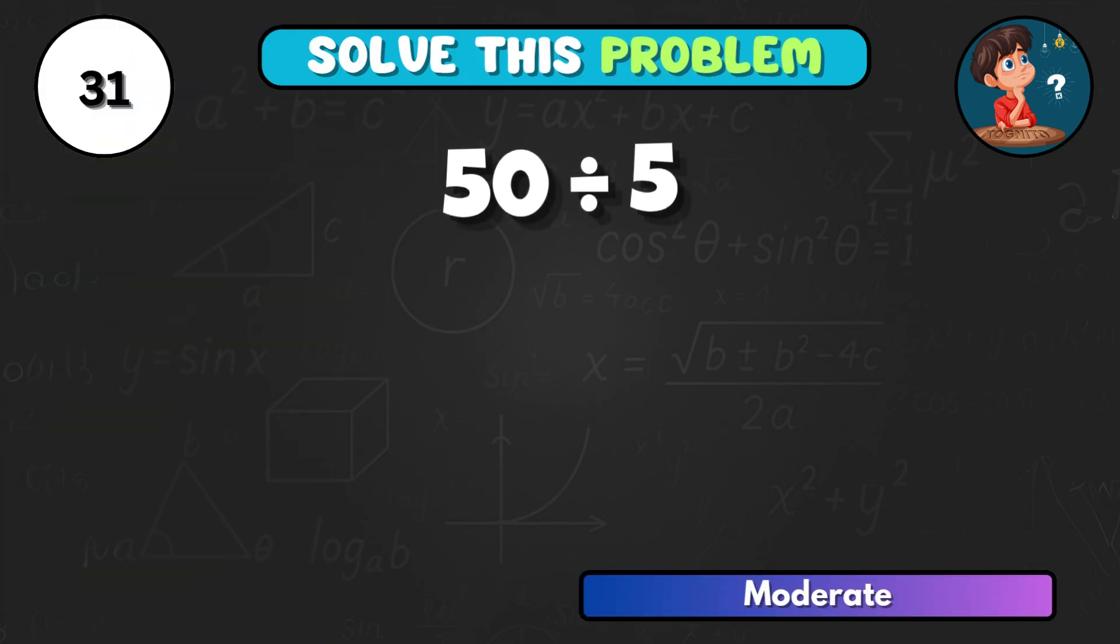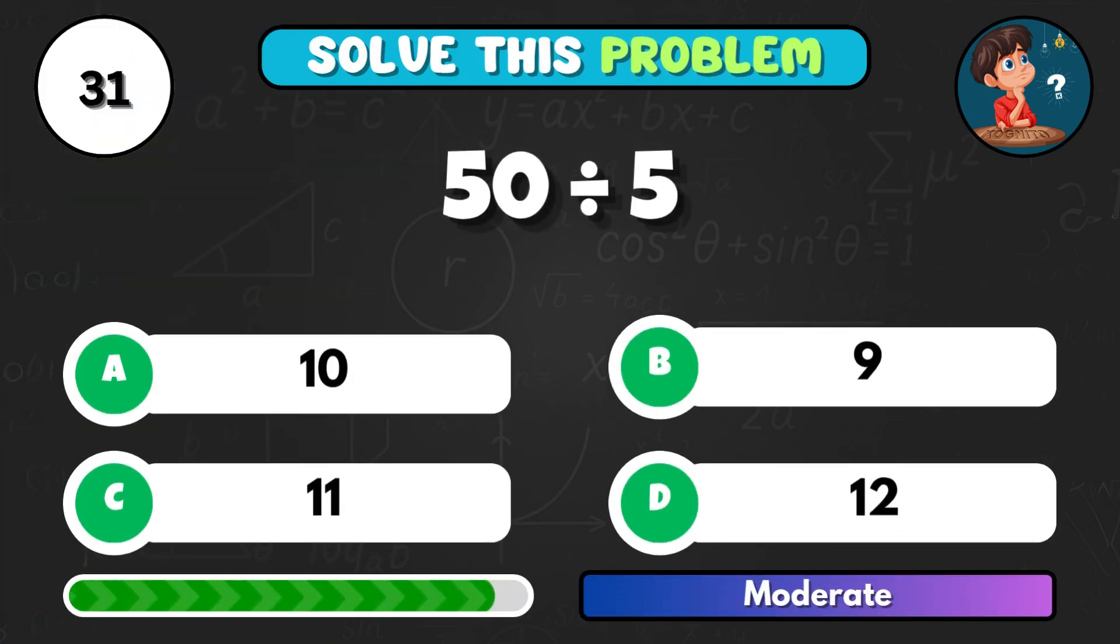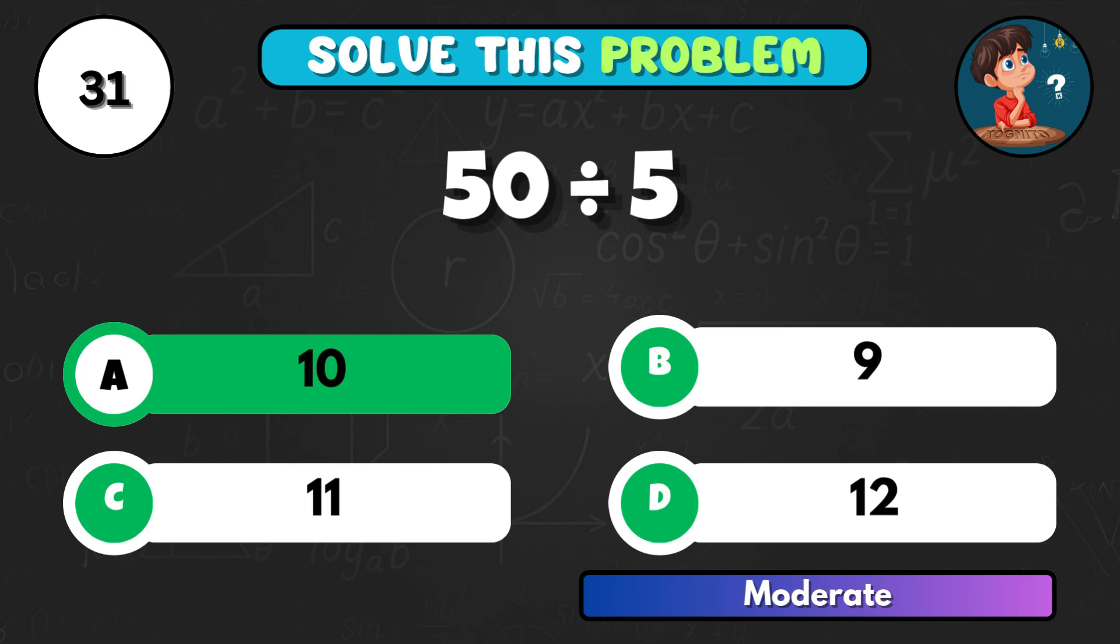50 divided by 5. 50 divided by 5, what's your final number? Option A equals 10.